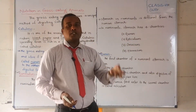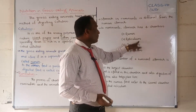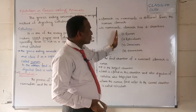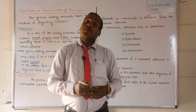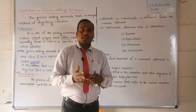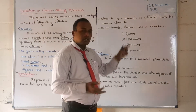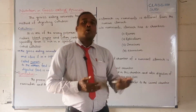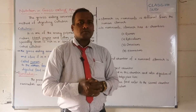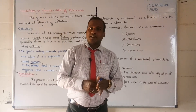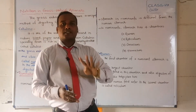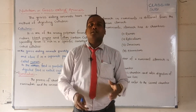The four chambers of the ruminant stomach are: first, the rumen — where food is quickly stored; second, the reticulum; third, the omasum; and fourth, the abomasum. These four chambers are present in the stomach of ruminants, which are the grass-eating animals. We will discuss each one by one.